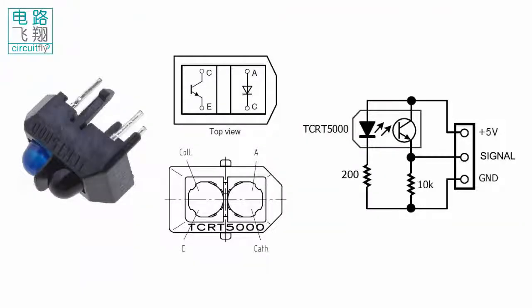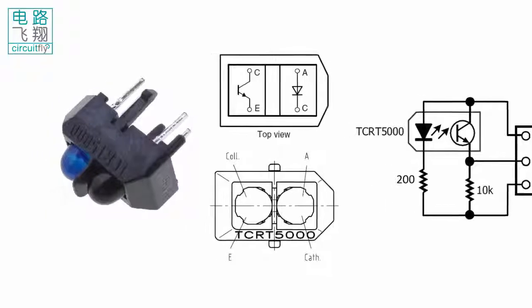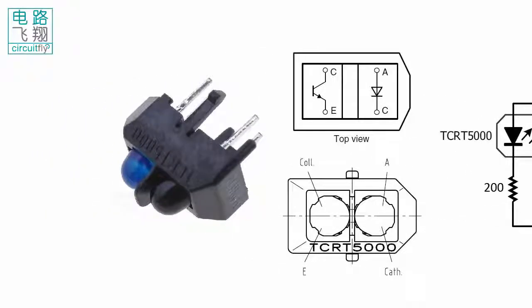TCRT5000 是一种反射型的红外传感器，由红外发射管和红外接收管安装在一个支架上构成。TCRT5000 is a reflected infrared sensor, consisting of an infrared emitter and an infrared receiver.